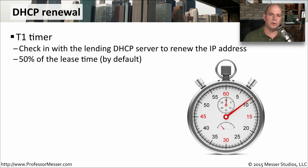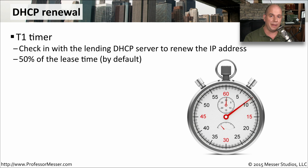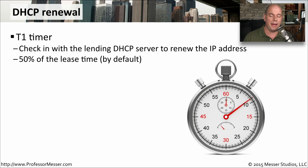There are two important timers to consider when discussing the DHCP renewal process. The first is the T1 timer — this is how often your workstation is going to check in with the DHCP server to confirm that the IP address is still being used on the network and effectively restart the lease timer. It does this when the lease time gets down to 50%. So if you've been allocated an IP address with a lease time of eight days, your workstation will wait four days and then check in, at which point the timer is set back to eight days again.